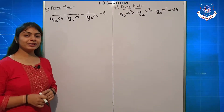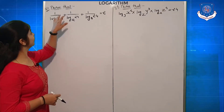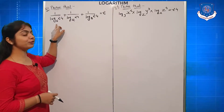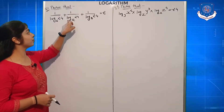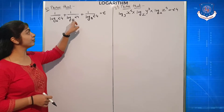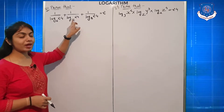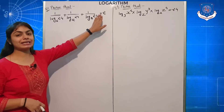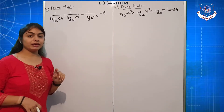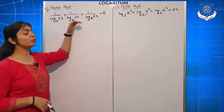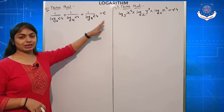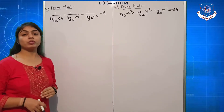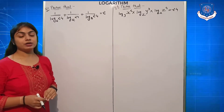Look at the question here. Prove that: 1 upon log 24 to the base 6, plus 1 upon log 24 to the base 12, plus 1 upon log 24 to the base 8, is equal to 2. So this is a two-part question — LHS side is equal to RHS side — and you have to prove it.